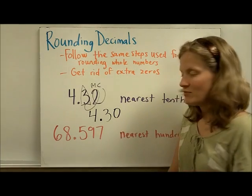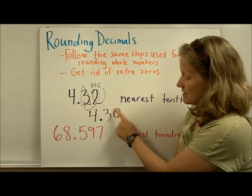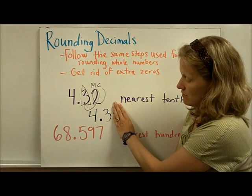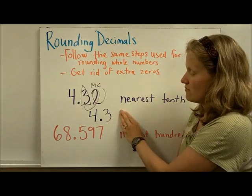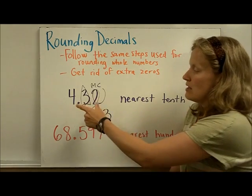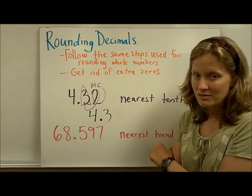Then we have 4.30. Well, this zero doesn't have to be here, it's an extra zero. Three tenths is the same as 30 hundredths. So we can just get rid of this zero, and this number rounded to the nearest tenth would be 4.3.